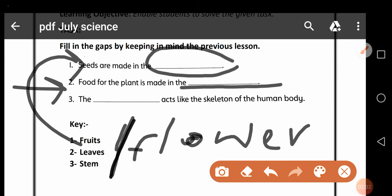Second blank is, food for the plant is made in the blank. Plant ki food kahan banti hai? This is leaves. Plant ki food uske leaves mein banti hai.